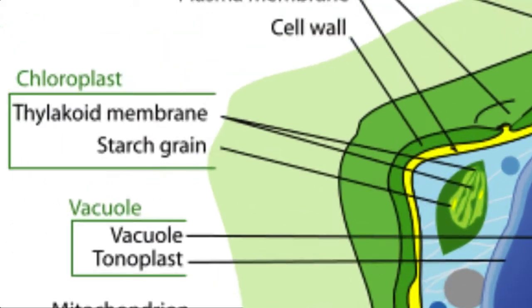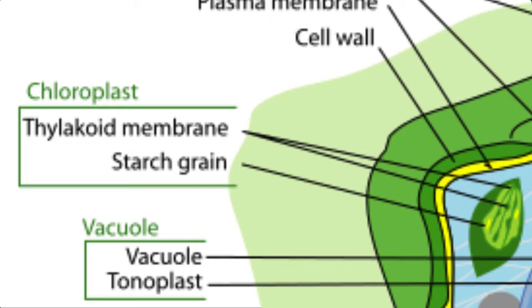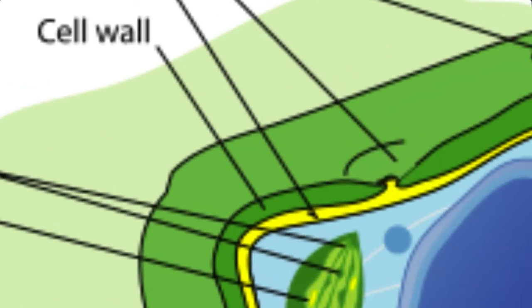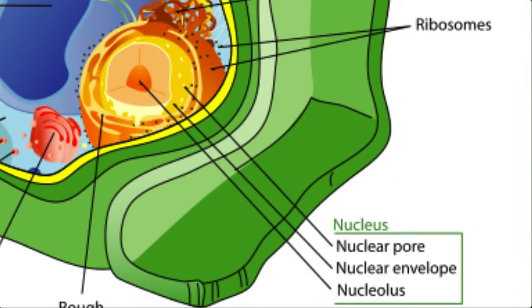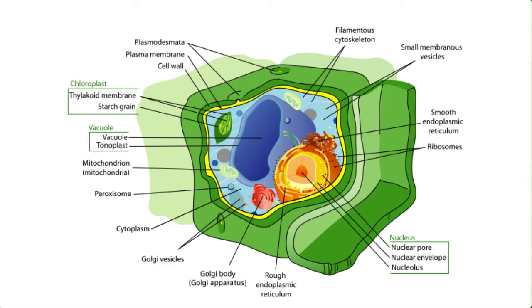We have the green chloroplasts, of course responsible for photosynthesis. We have a cell wall that, unlike fungi and bacteria, is composed of the structural carbohydrate cellulose. And of course you will notice that we have a membrane-enclosed nucleus, which makes sense given that these organisms are part of the eukarya domain.